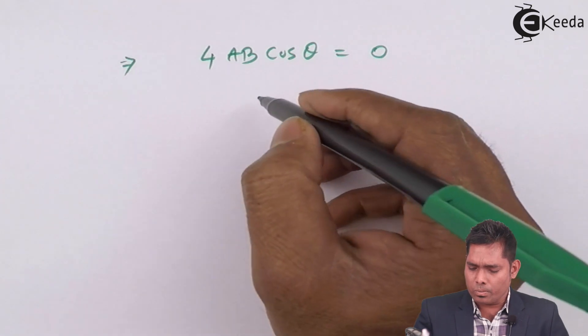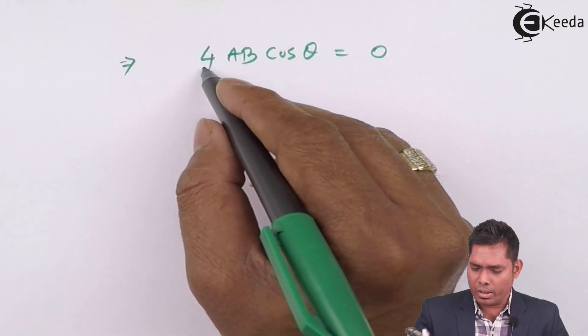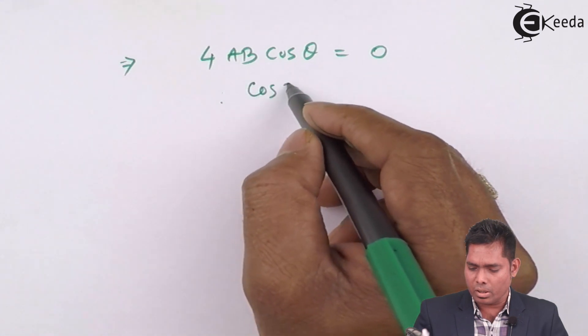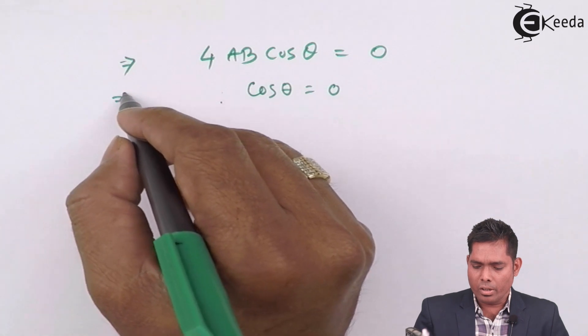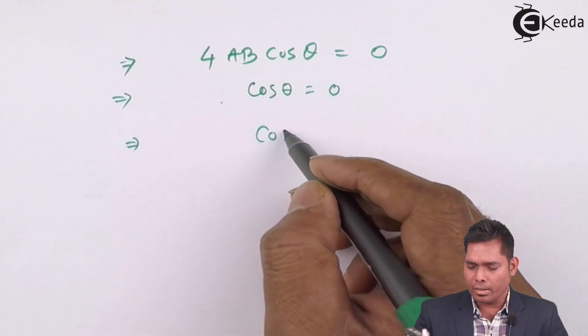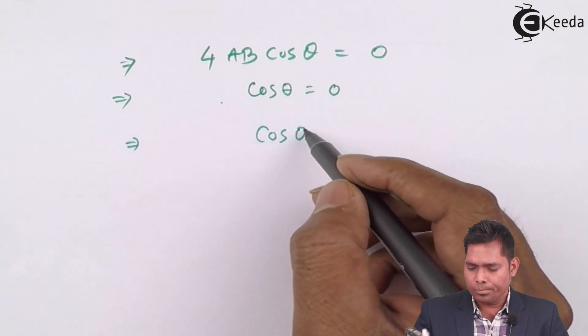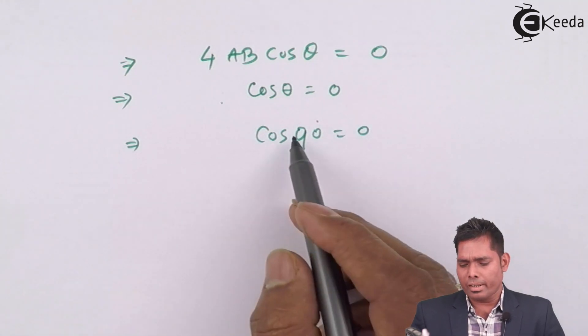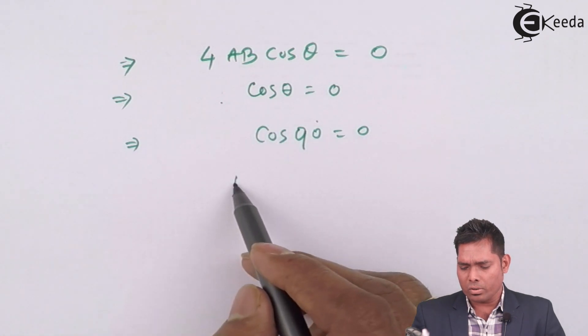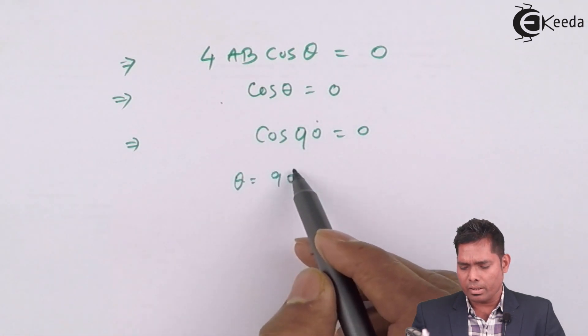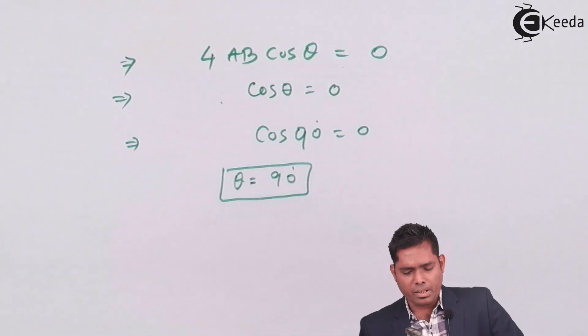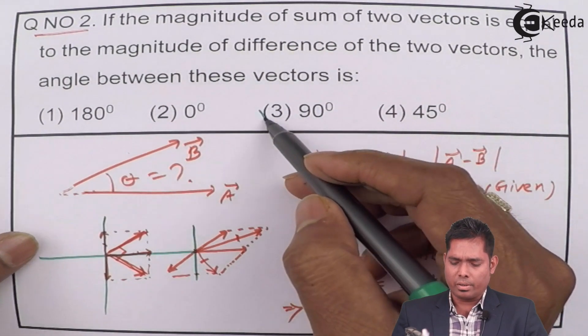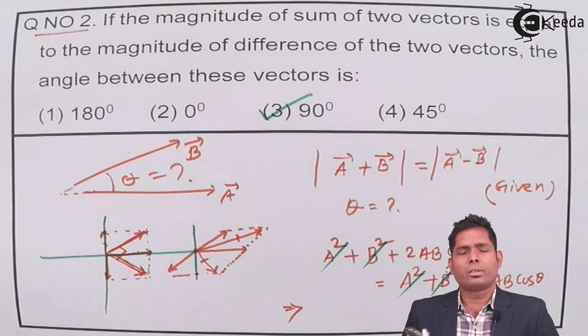If this side is zero, then I write that four is never zero. Magnitudes are not zero. That means cos θ is zero. If cos θ is zero, we know that cos 90° is zero. Then I can write that θ must be equal to 90 degrees. So therefore, this is the right answer to this question. Thank you.